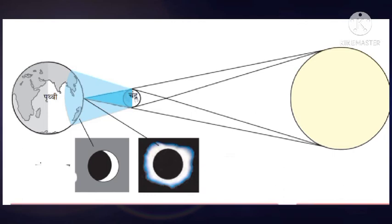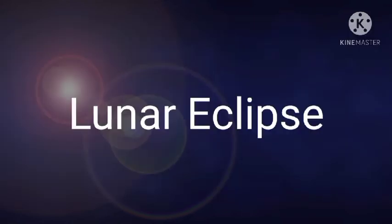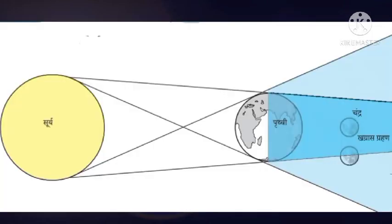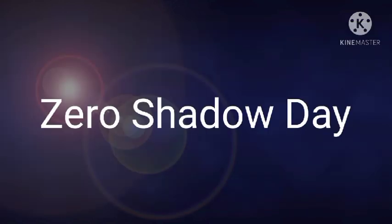The next eclipse is the lunar eclipse. When the earth comes between the sun and the moon and their axes are in the same plane, the lunar eclipse takes place. The lunar eclipse occurs on a full moon day. When the shadow of the earth falls on the moon, we experience a lunar eclipse. When the moon is in the umbra of the earth, a total eclipse is seen; when it is in the penumbra, a partial lunar eclipse is seen.